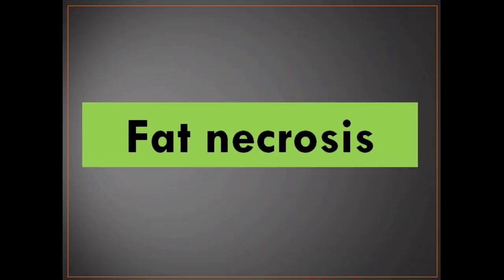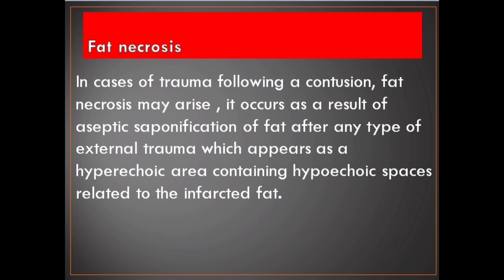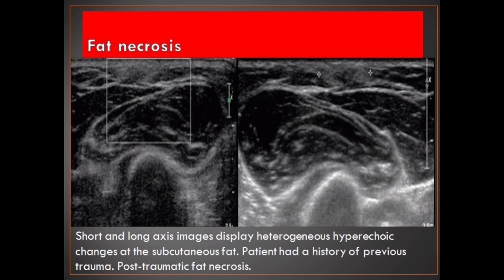Fat necrosis. In cases of trauma following a contusion, fat necrosis may arise. It occurs as a result of aseptic saponification of fat after any type of external trauma, which appears as a hyperechoic area containing hypoechoic spaces related to the infarcted fat. Short and long axis images display heterogeneous hyperechoic changes at the subcutaneous fat. Patient had a history of previous trauma — post-traumatic fat necrosis.